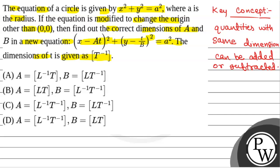Now we have been given the new equation (x - At)² + (y - t/B)² = a². Since we are subtracting At from x, dimension of x will equal dimension of At. Dimension of x is length.